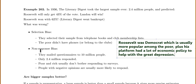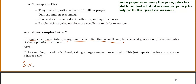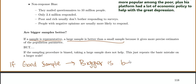Also, there was non-response bias: they mailed questionnaires to 10 million people but only 2.4 million responded. The poor and rich usually don't bother responding to surveys, and people with negative opinions are more likely to respond. This raises the question: are bigger samples better? Only if the sample is representative — a large sample gives more precise estimates of the population parameter. But if your sampling procedure is biased, taking a large sample doesn't help; it just repeats the same mistake over and over. Bigger is better only if you have a good sample.